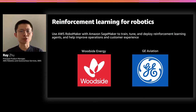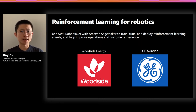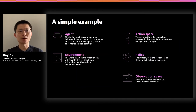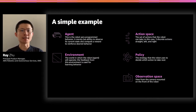Some of our customers have already started their journey using reinforcement learning to solve complex robotics applications in their businesses. I'm giving two examples and will walk you through how we've been working with these companies using AWS services and reinforcement learning to solve complex robotics challenges. Now I'll walk you through a very simple example so you get an idea of how the training really goes and what the desired outcome of the training process looks like.